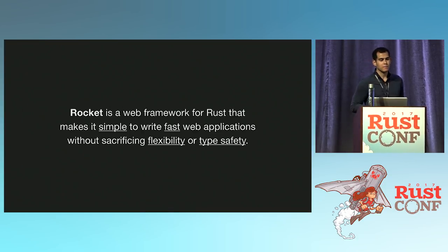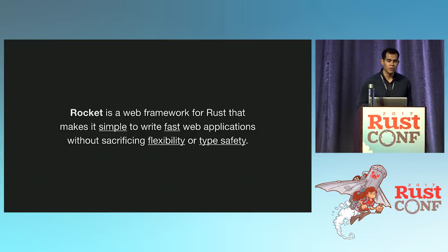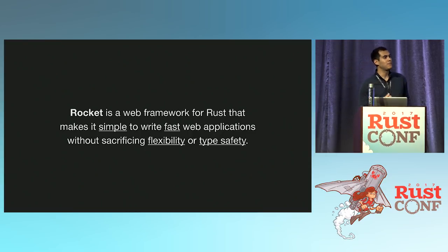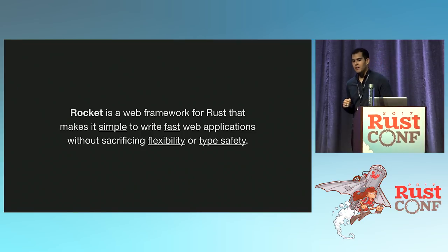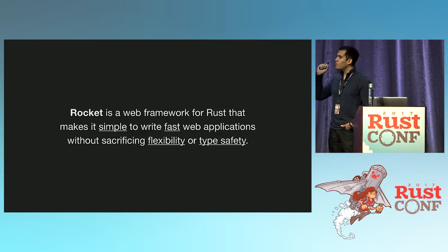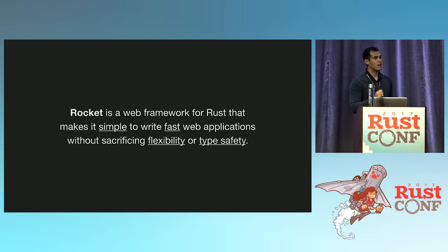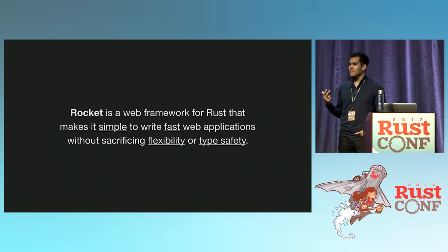Let's start with an introduction to Rocket. Rocket is a web framework for Rust that ideally makes it simple — very easy to read, very easy to write — to write fast web applications, what you would expect from a program written in Rust, without sacrificing flexibility or type safety. It's interesting that if you write a program in Rust, it doesn't mean your program actually takes advantage of type safety.